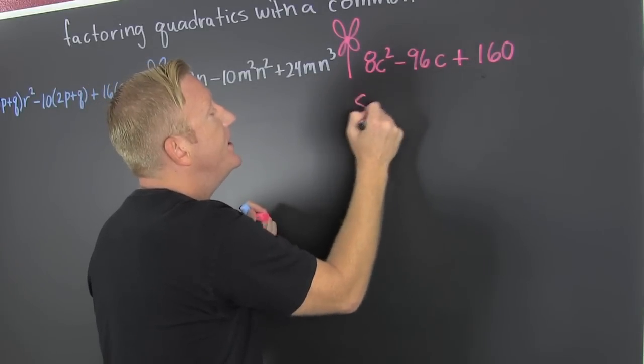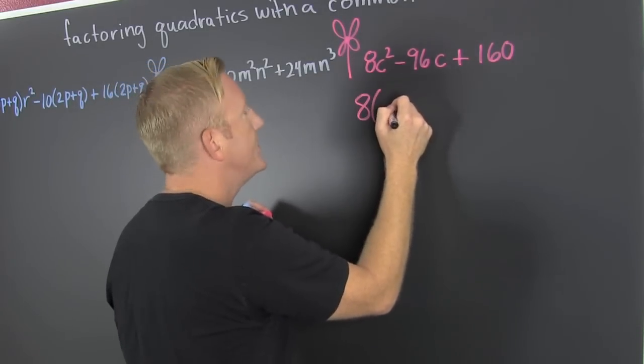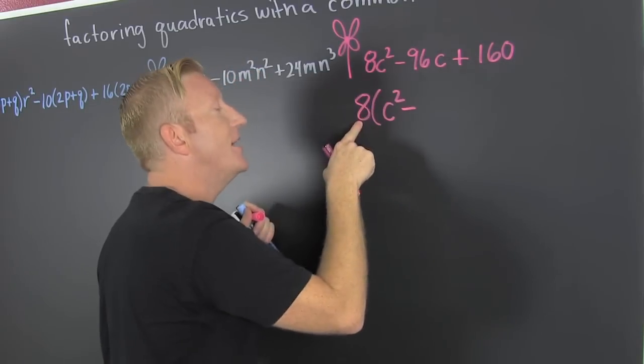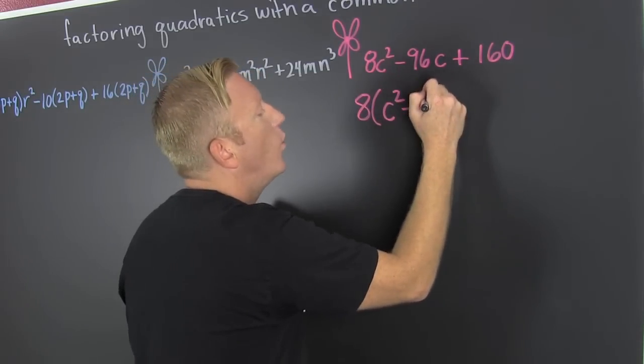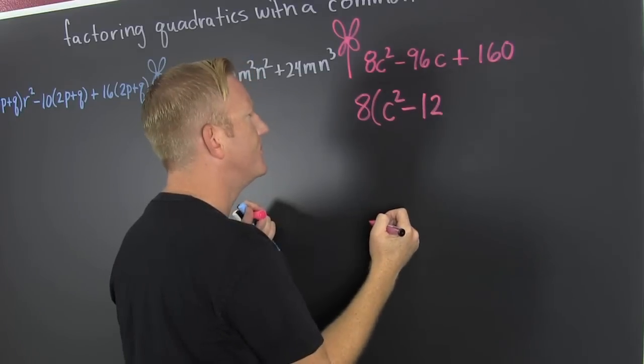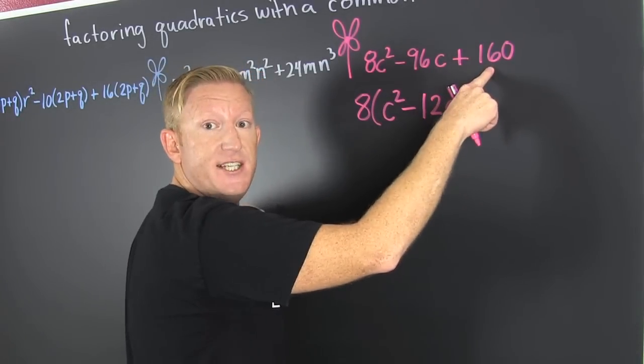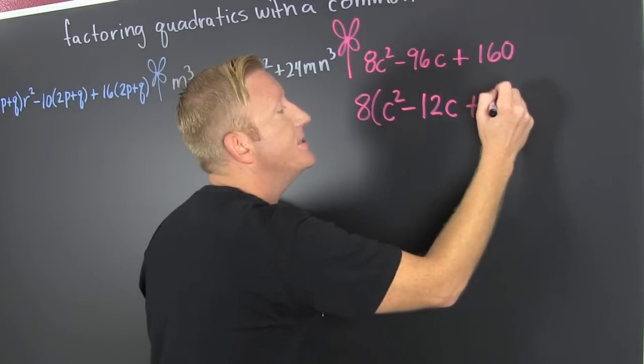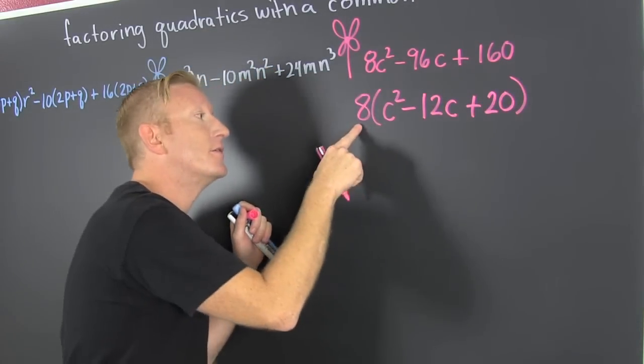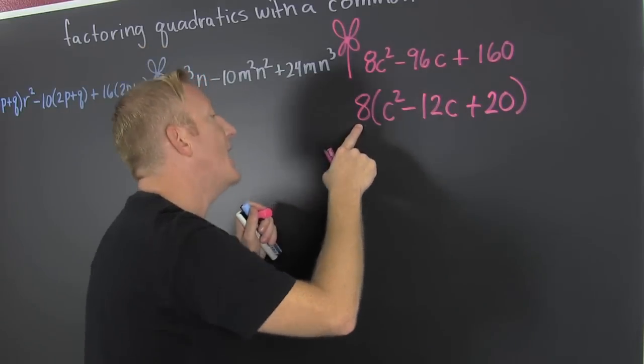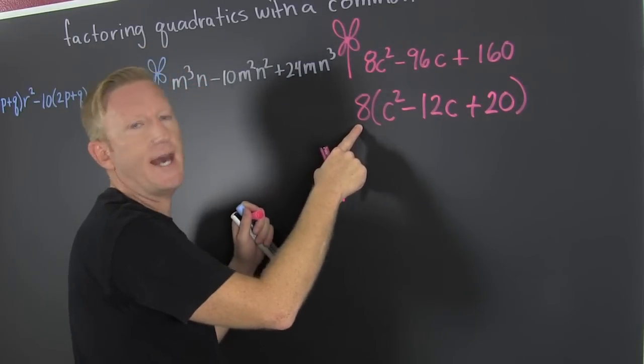I see I have an 8 in each one of those, so I'm gonna pull that 8 out. I have c² minus 96 divided by 8 is 12c, plus 160 divided by 8 is 20. So the first rule of factoring: never talk about factoring. After that, pull out a common factor. That's done.